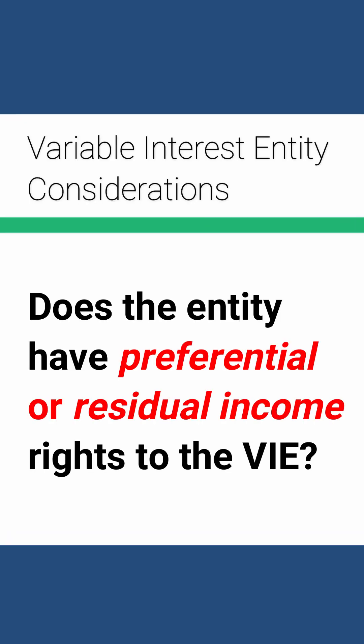A third example is the parent has the right to receive residual income. Basically, they have a preferred benefit from this entity.